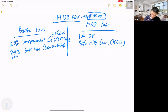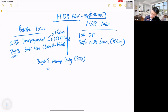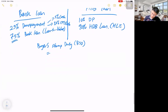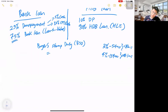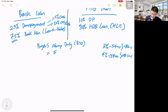First of all, right from the start, we have what we call the Buyer Stamp Duty — BSD. The shortcut formula: anything below one million dollars is 3% minus $5,400. Anything on top of one million dollars is 4% minus $15,400. Based on a $500k flat, 500k times 3% minus $5,400 gives us $9,600 in Buyer Stamp Duty.